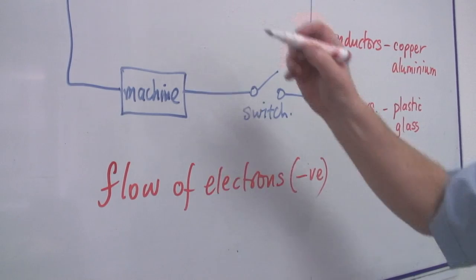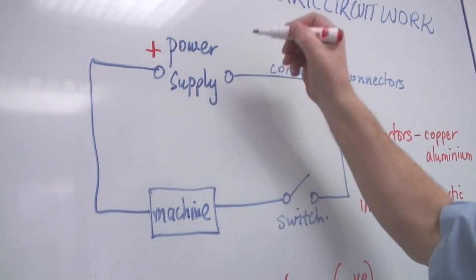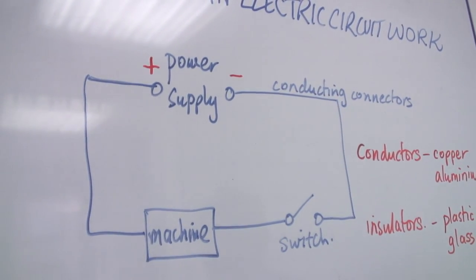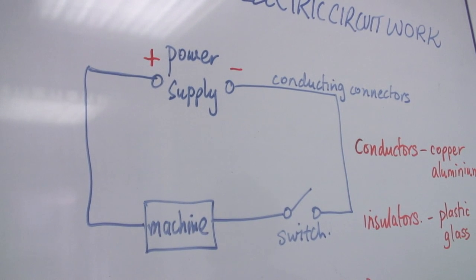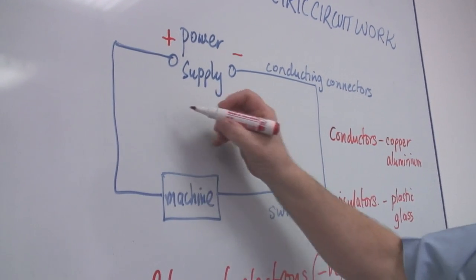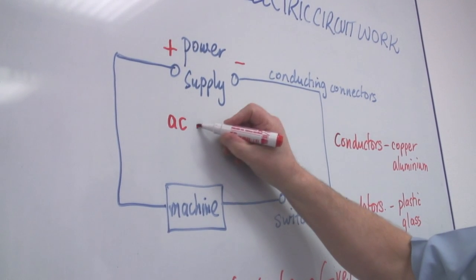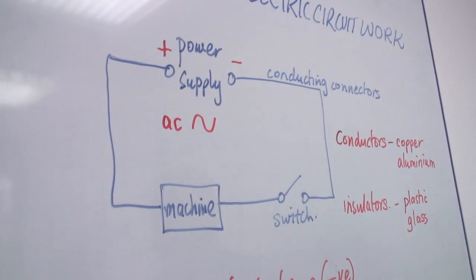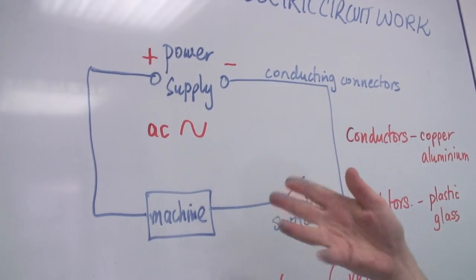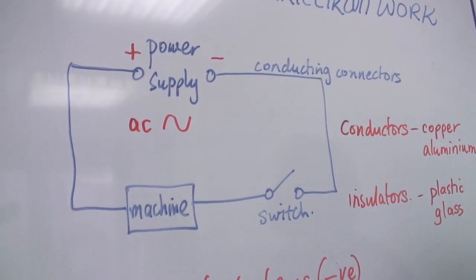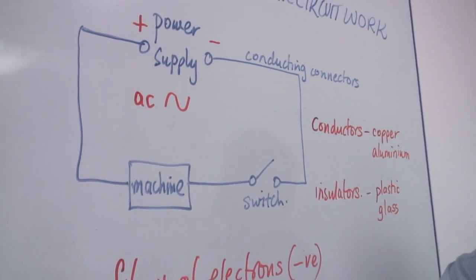And you'll see on the power supply, a plus and a minus sign. Sometimes the power supply is AC. And an AC supply is like that. This doesn't have a plus and a minus. In fact, the current goes backwards and forwards, instead of going continuously round.